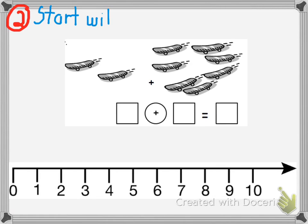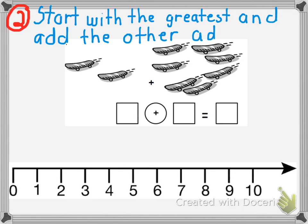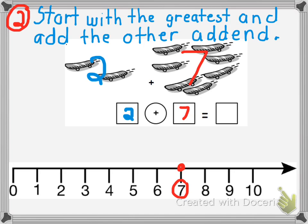So I have 7 skateboards. For my next step, I am going to start with the greatest addend — the 7 — and add the other addend. I'm going to start with 7 because that's the greatest addend, and my other addend is 2. So starting with 7 and adding 2 gives me the answer of 9. I started with the greatest addend and added the other addend.